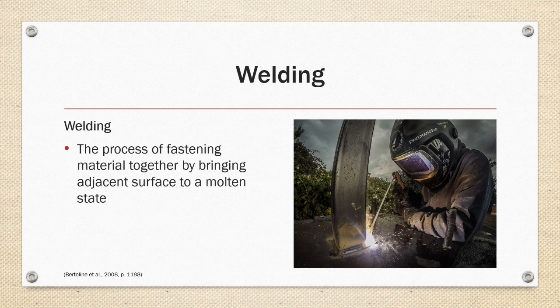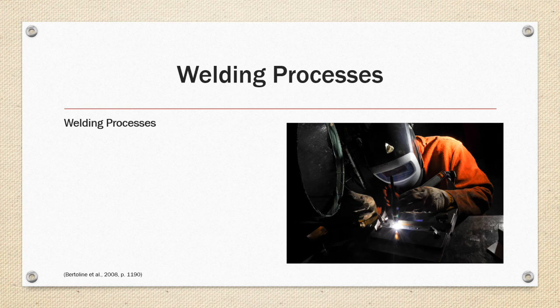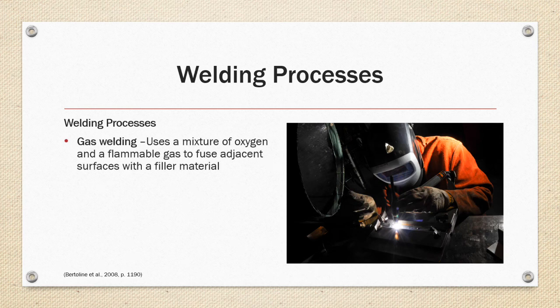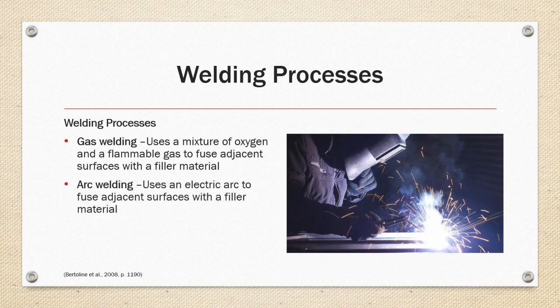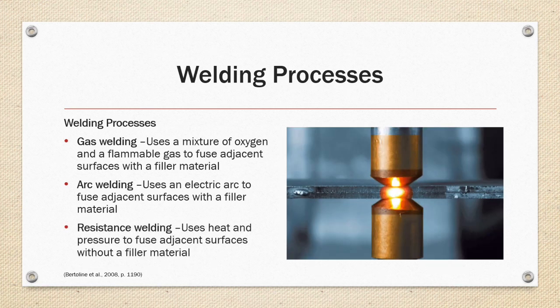Welding is the process of fastening material together by bringing adjacent surfaces to a molten state. There are several categories of welding processes. The first is gas welding, which uses a mixture of oxygen and flammable gas to fuse adjacent surfaces with a filler material. Arc welding uses an electric arc to fuse adjacent surfaces with a filler material. Resistance welding uses heat and pressure to fuse adjacent surfaces without a filler material.